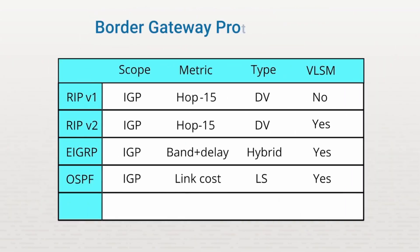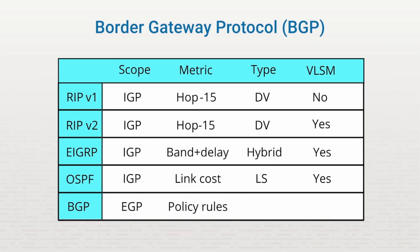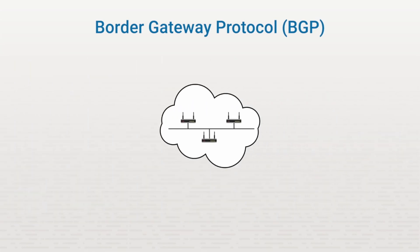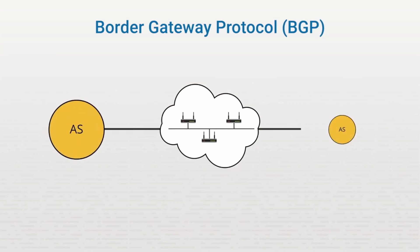Now let's look at Border Gateway Protocol, or BGP. BGP is the only Exterior Gateway Protocol, or EGP, that we'll discuss. It uses a special metric based on policies and rules. It is, to a degree, a distance vector protocol, but it's often labeled as an advanced distance vector protocol, and it's sometimes called a path vector protocol. It also supports VLSM. The key thing to remember is that BGP is the routing protocol used to share routes on the internet and between autonomous systems.